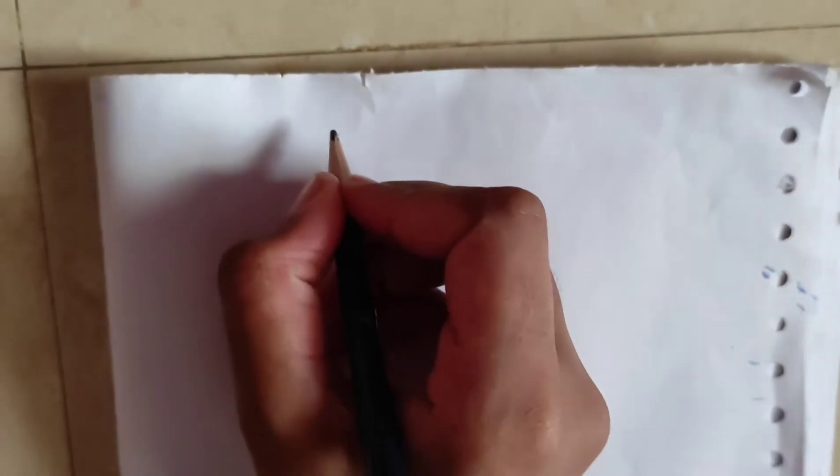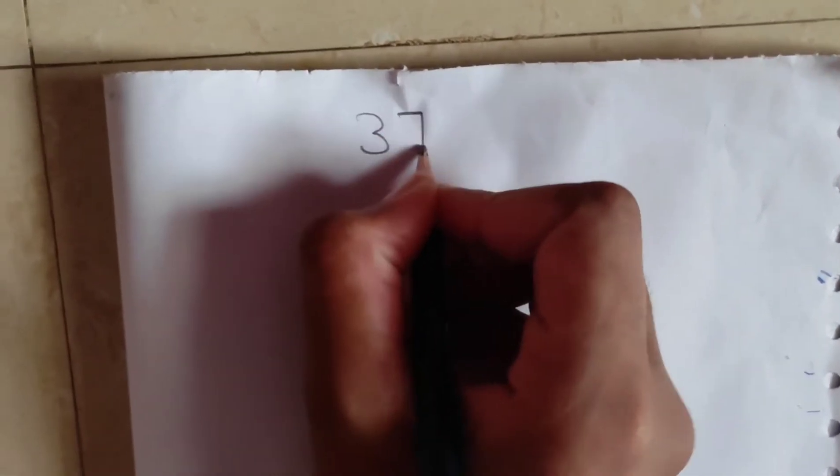First, you need to tell your spectator to write a 4 digit number, maybe a random 4 digit number. Then you say in another paper, I am going to predict the number.